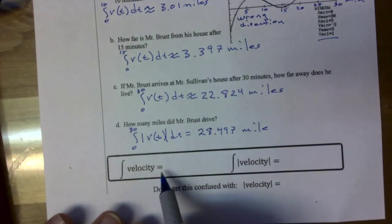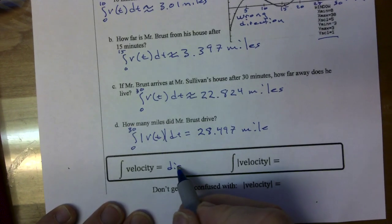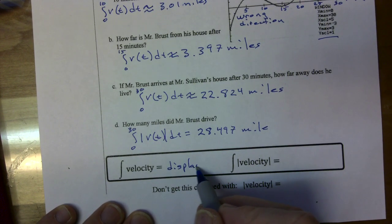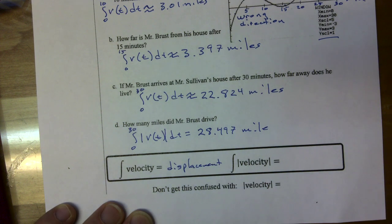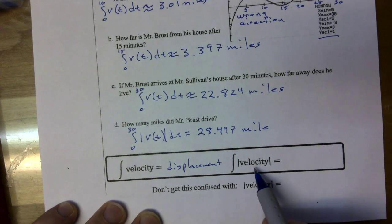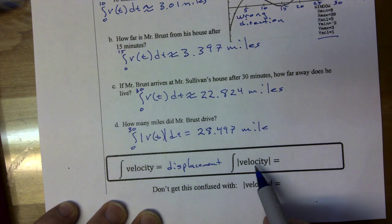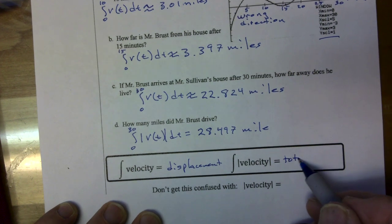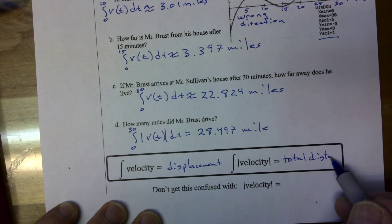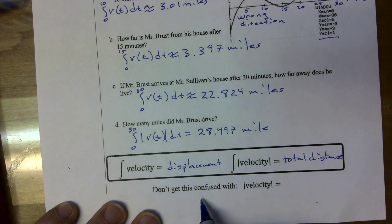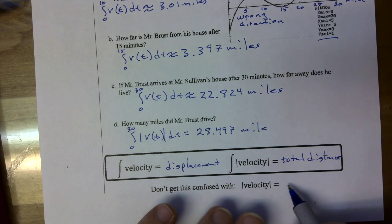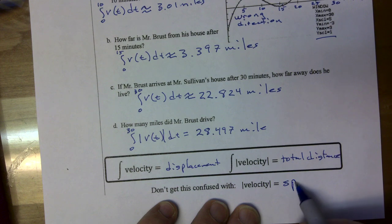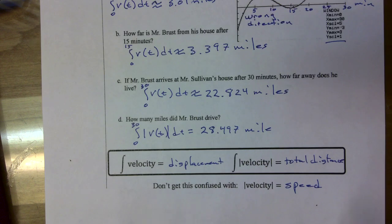When you integrate velocity, you'll always get displacement. When you integrate the absolute value of velocity — or what I'd call speed — you get total distance. Don't confuse this: the absolute value of velocity is speed, not distance.